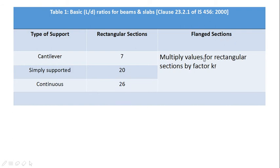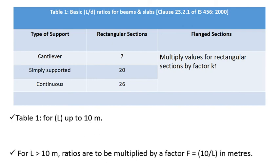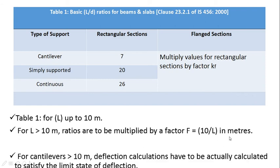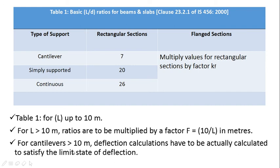Now if it is a flanged section, then you want to multiply these values by a factor called KF. K is a factor, F stands for flanged. So the above table for L/D is valid only if the structure element's length is up to 10 meter. IS code says that if the length is more than 10 meter, then the ratios are to be multiplied by a factor equal to 10/L in meters. But for cantilevers greater than 10 meter, the code says that deflection calculations have to be actually calculated to satisfy the limit state of deflection.